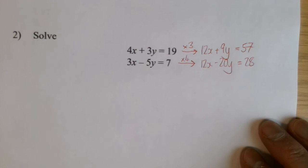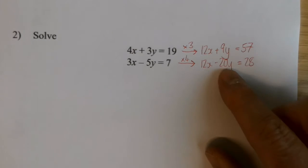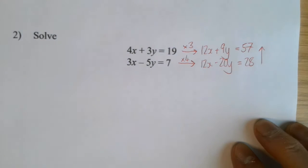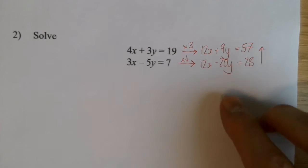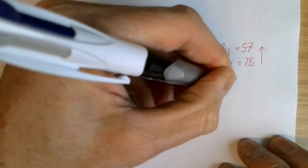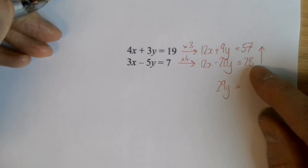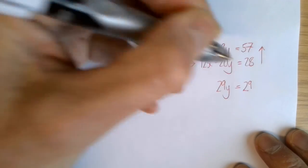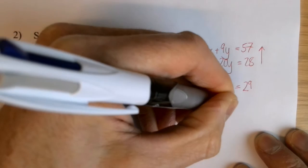Same number of x's. So I'm now asking, where are the fewest number of y's? It's here, minus 20. So that's the direction I'm going to go. Going from minus 20y up to 9y. That's added 29y's. And that's made the total 29 bigger. So y must be 1.